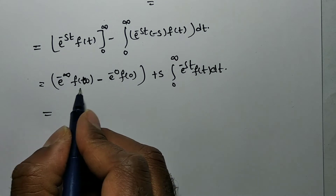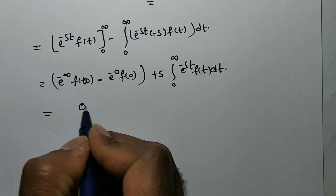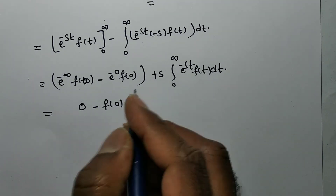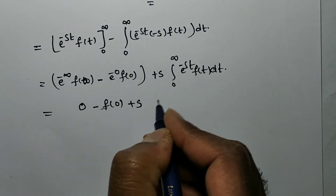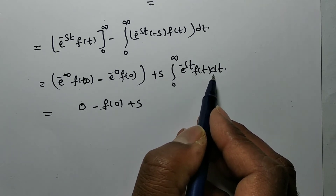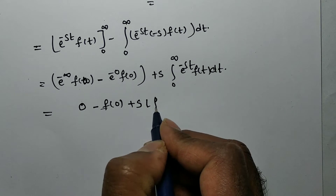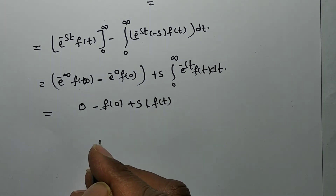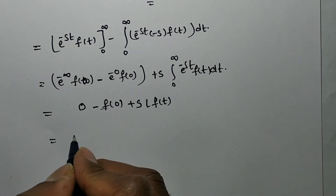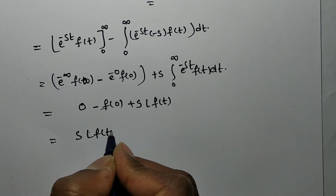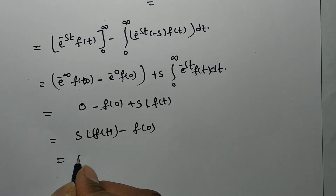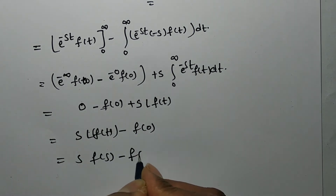Now e^(-∞) equals 0, and e^0 = 1, so the boundary term becomes 0 - f(0) = -f(0). The remaining integral, integral from 0 to infinity of e^(-st)·f(t) dt, is just L{f(t)} by definition. So we get: s·L{f(t)} - f(0).